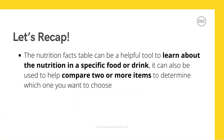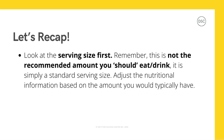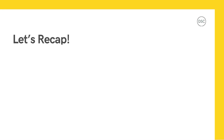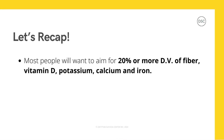To recap what we've learned in this video: the nutrition facts table can be a helpful tool to learn about the nutrition in a specific food or drink, and it can also be used to compare two or more items to determine which one you want to choose. Look at the serving size first — it is not the recommended amount you should eat or drink, it is simply a standard serving size. Adjust the nutritional information based on the amount you would typically have. Most people will want to aim for 5% or less DV of sodium, added sugars, and saturated fats, and 20% or more DV of fiber, vitamin D, potassium, calcium, and iron.